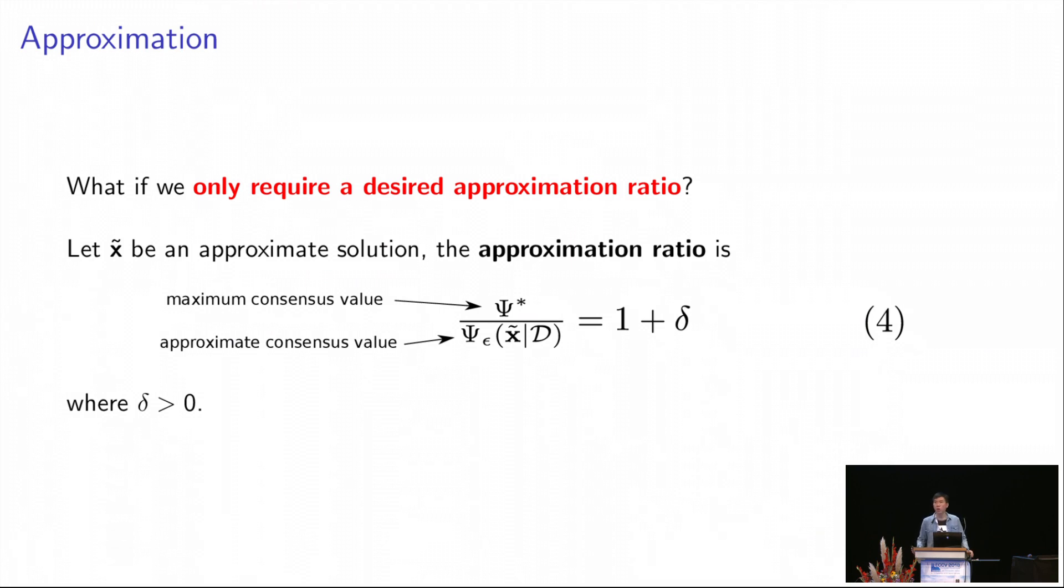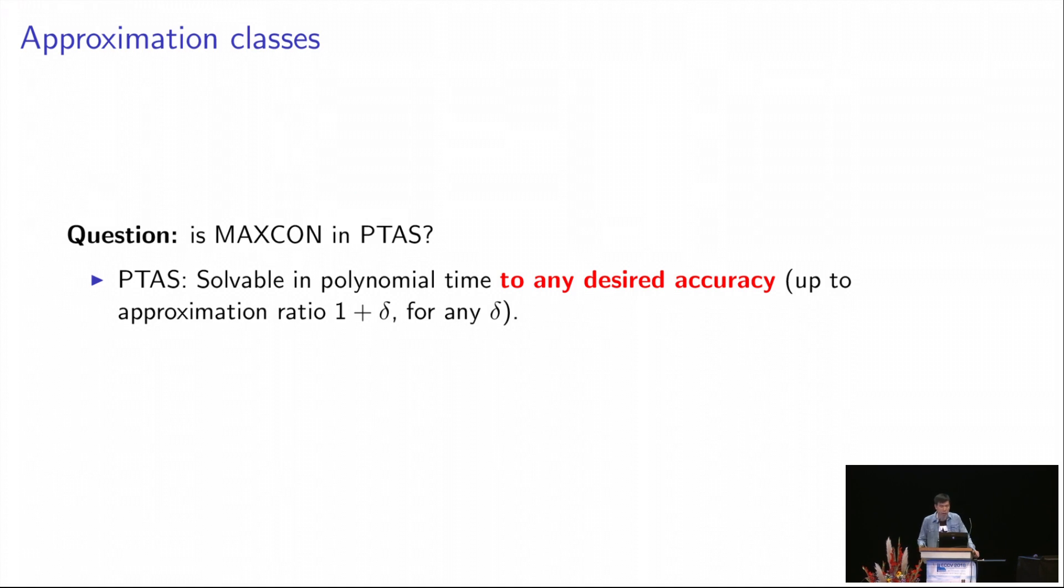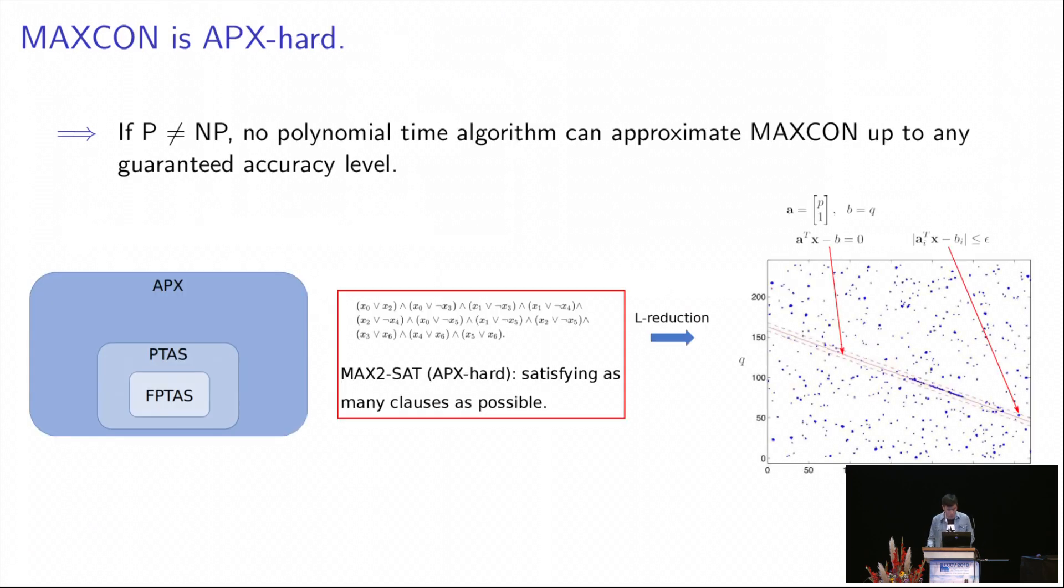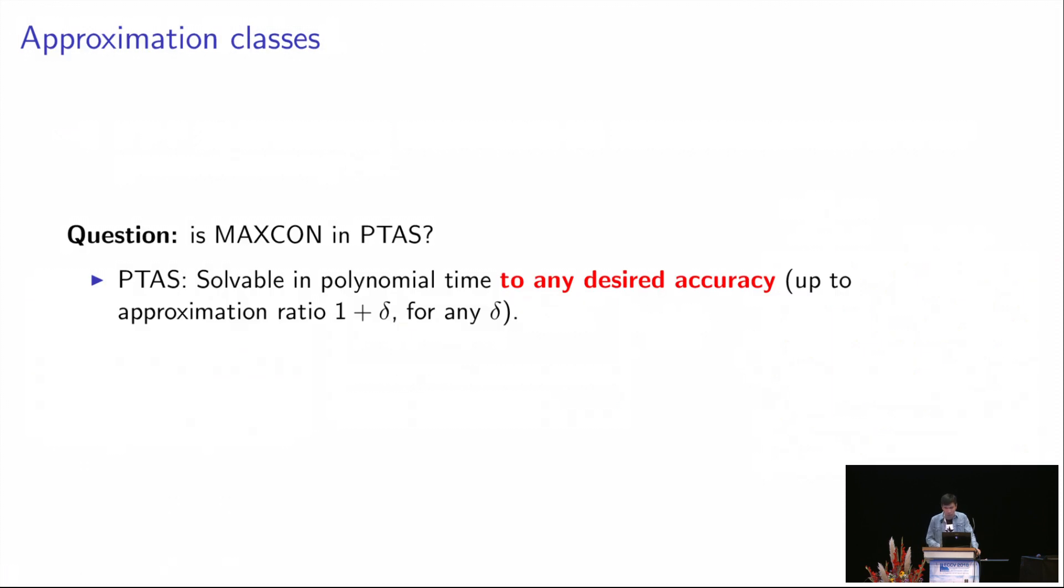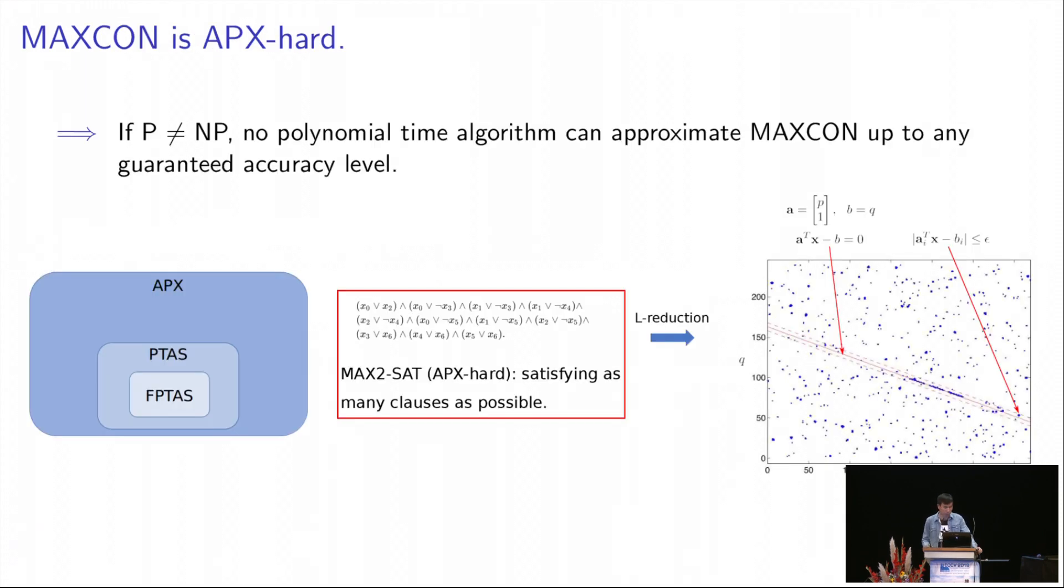So now we know that we don't want to hope to solve MAXCON exactly in general. So we want to take a step back. We want to ask the question, can we still have an efficient algorithm if we only want a certain desired approximation ratio, a guaranteed approximation rate? So the approximation ratio is the ratio between the maximum consensus value and some approximate consensus value. We want to ask the question, is MAXCON approximable? A problem is approximable if it can be solvable in polynomial time to any desired accuracy or any desired approximation ratio. If the answer is yes, then it's still good because in practice we can just ask for a certain accuracy level and just perform the polynomial time algorithm.